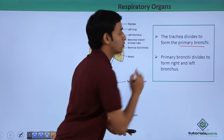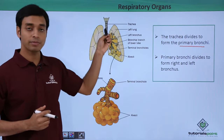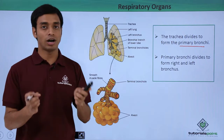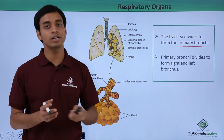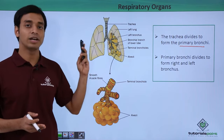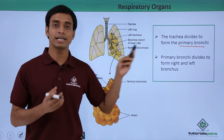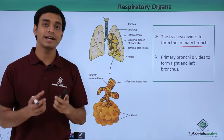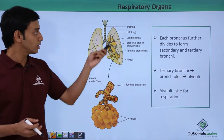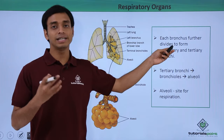The primary bronchi divides into two halves: the left primary bronchi and the right primary bronchi, which enter the two lungs — the left lung and the right lung. The right primary bronchi is quite thicker, wider, and shorter than the left primary bronchi.